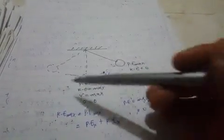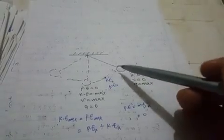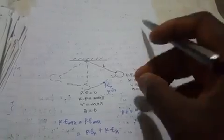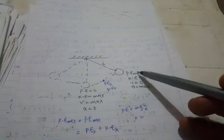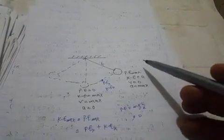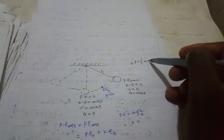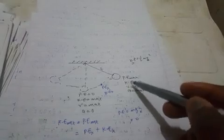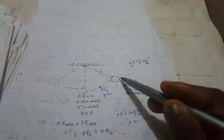Now I want to describe the motion of a simple pendulum. The length of the pendulum is L, and it sweeps this path. At maximum displacement, potential energy is maximum — whenever displacement is maximum, potential energy is always maximum. When potential energy is maximum, kinetic energy is zero, meaning velocity is zero, since kinetic energy is half mv squared. Acceleration, however, is maximum at this point of maximum displacement.